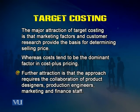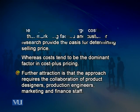Whereas costs tend to be the dominant factor in cost plus pricing, a further attraction of target costing is that the approach requires the collaboration of product designers, product engineers, marketing, and finance staff. In cost plus pricing, you take the cost — estimate total cost including variable and fixed — find a basis for allocating fixed to units, then add a markup for profit and facility charges. In target costing, the market-driven factors determine the selling price. This is the main difference between cost plus and target costing.